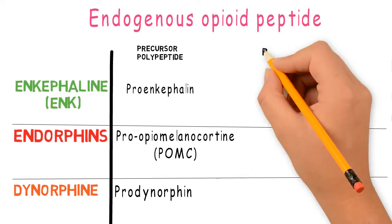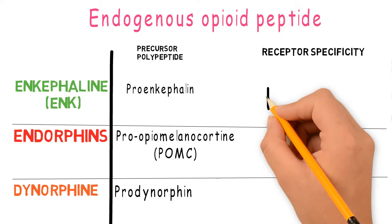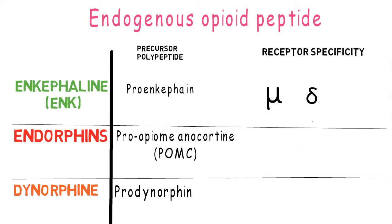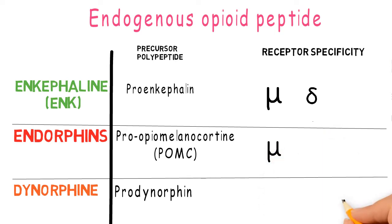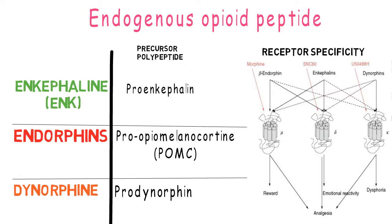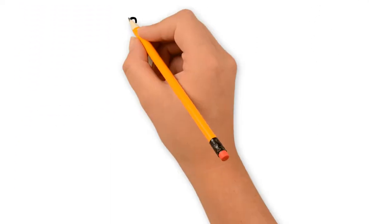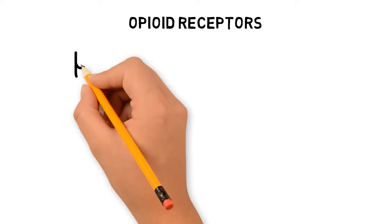Regarding receptor specificity: enkephalins act equally on mu and delta receptors, endorphins act specifically on mu receptors with low affinity for the other two, and dynorphins act on kappa receptors. Bold lines show specificity toward a specific receptor and dotted lines show low affinity. Endorphins are involved in the reward pathway, enkephalins are involved in emotional activity, and dynorphins are involved in dysphoria. All three play a major role in analgesia.